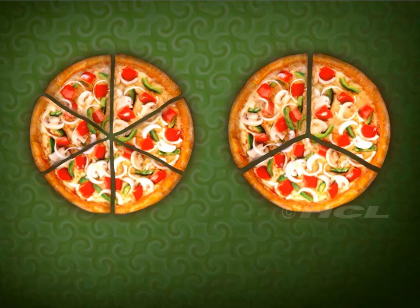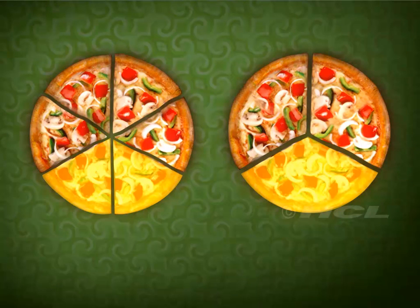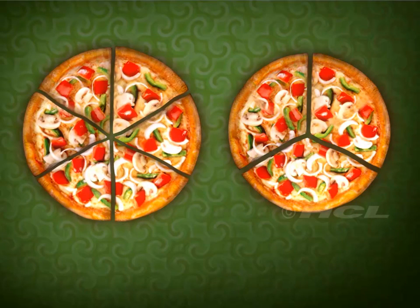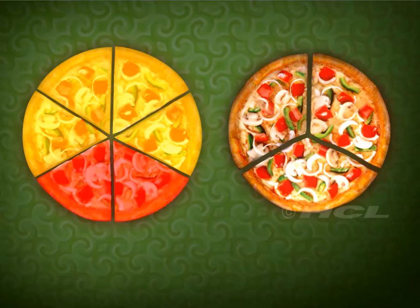Although Sam and Sela choose different portions of their pizzas, they will eat the same amount of pizza. But how is that possible? Let's look at Sam's pizza. Out of the six portions, Sam wants to eat two.